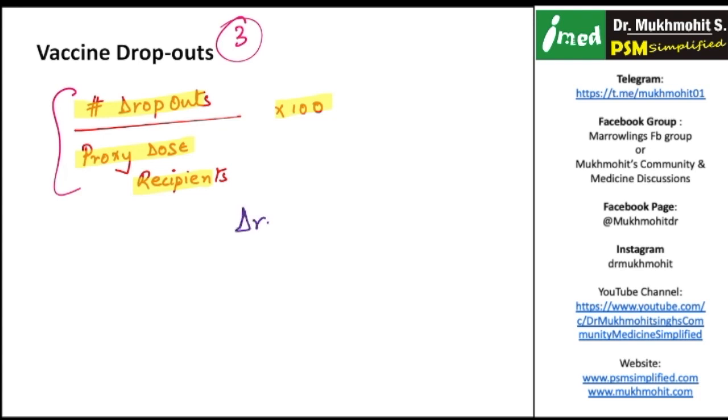Dropout means that the patient or the person was already in the program and he dropped off. That means there has to be a proxy dose recipient. For example, I want to find out the dropouts for pentavalent, usually we take for pentavalent, or we find out the dropouts for measles rubella vaccine.